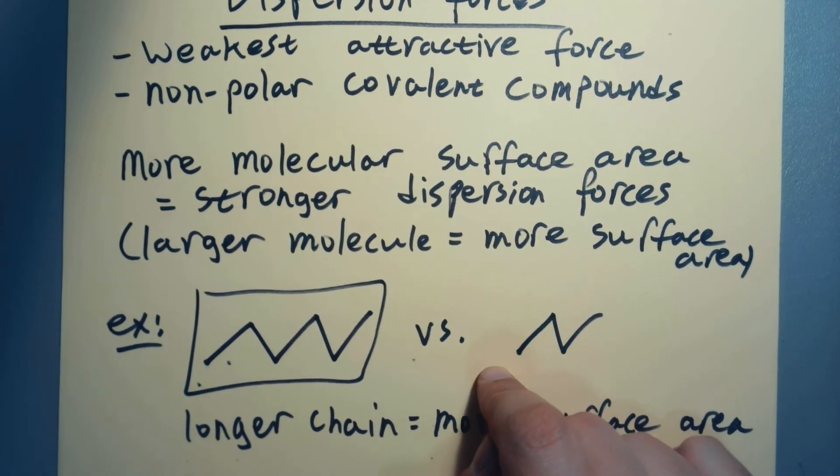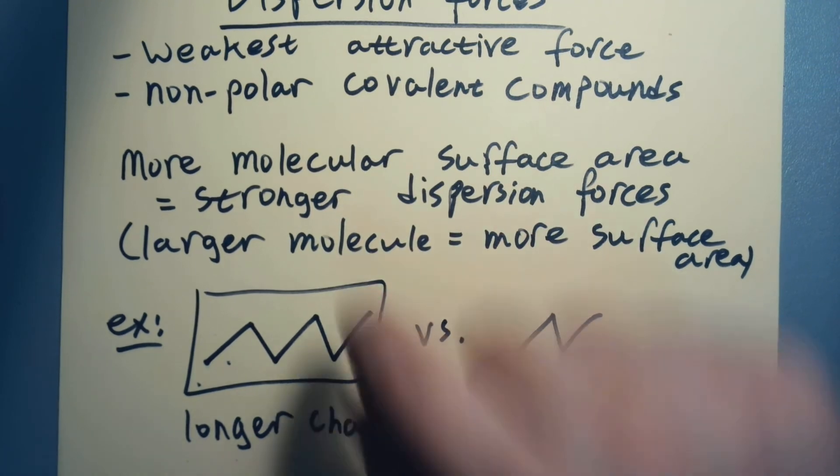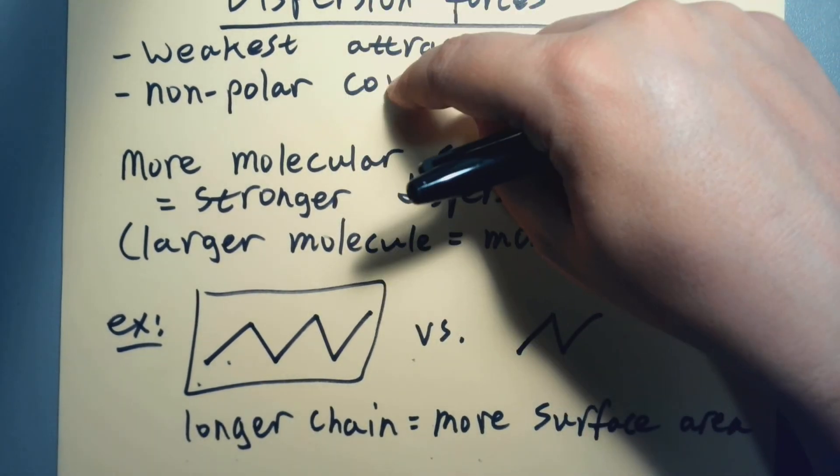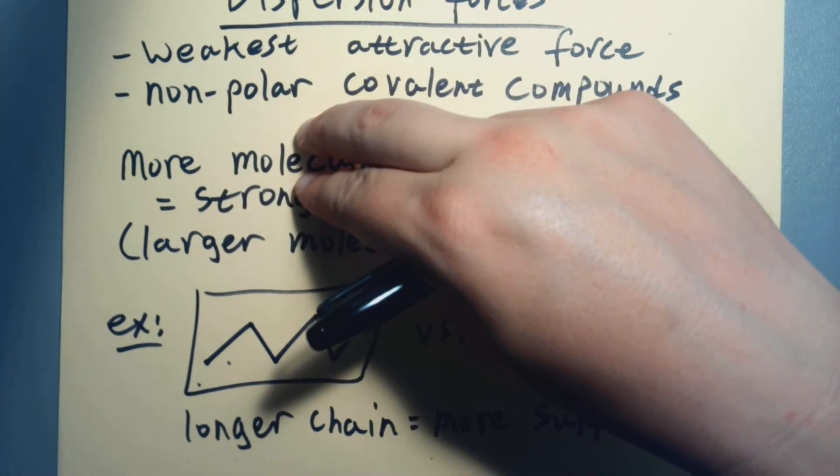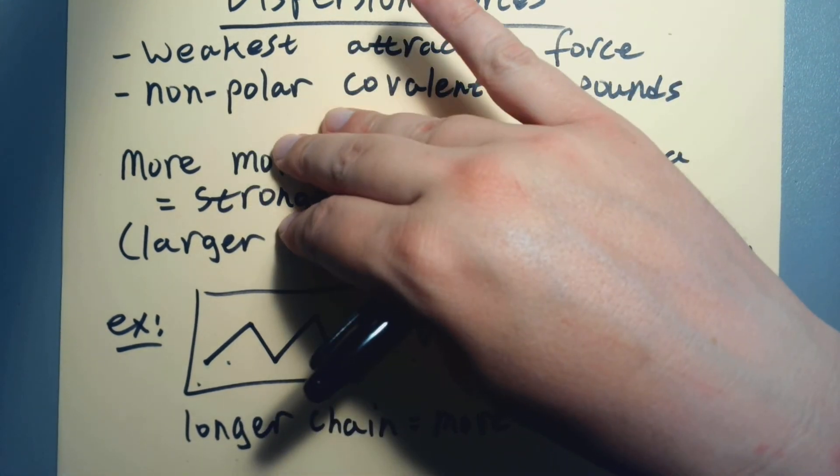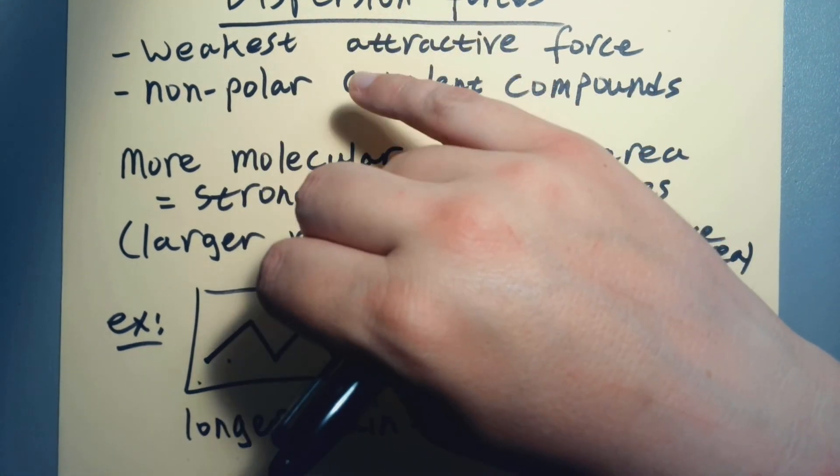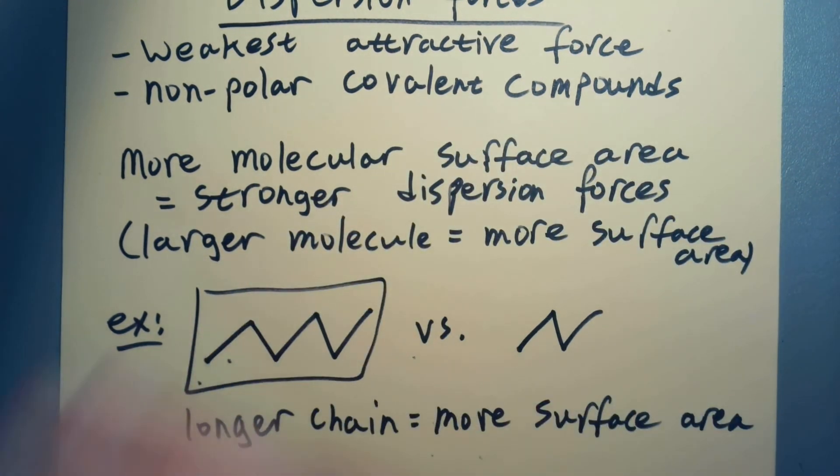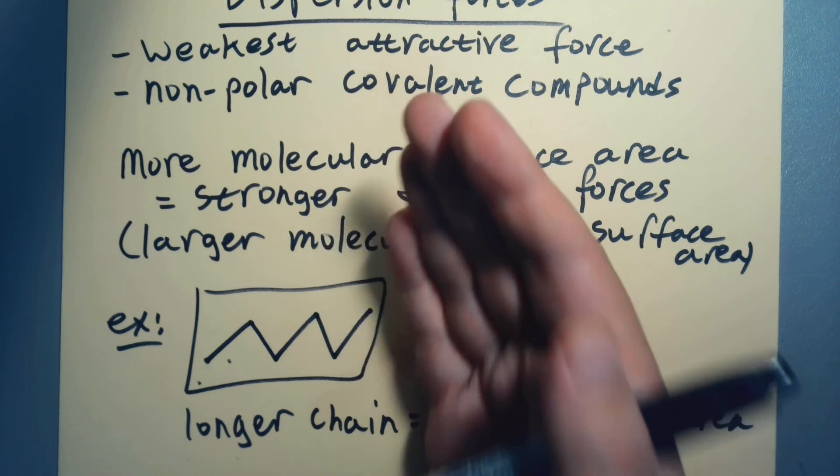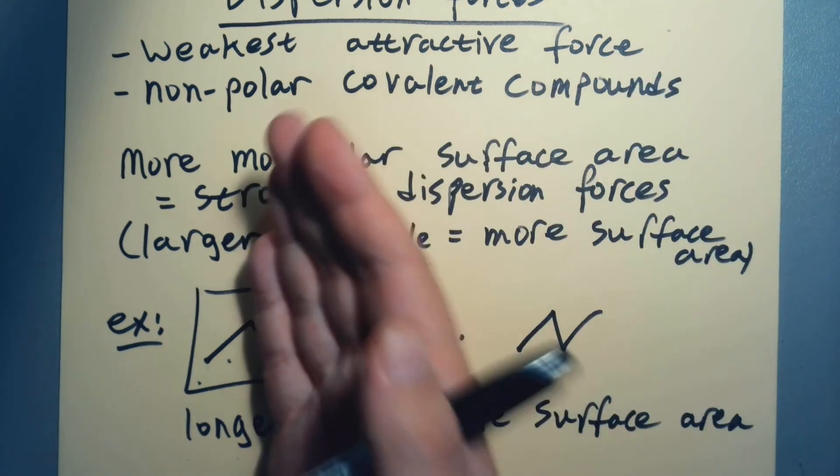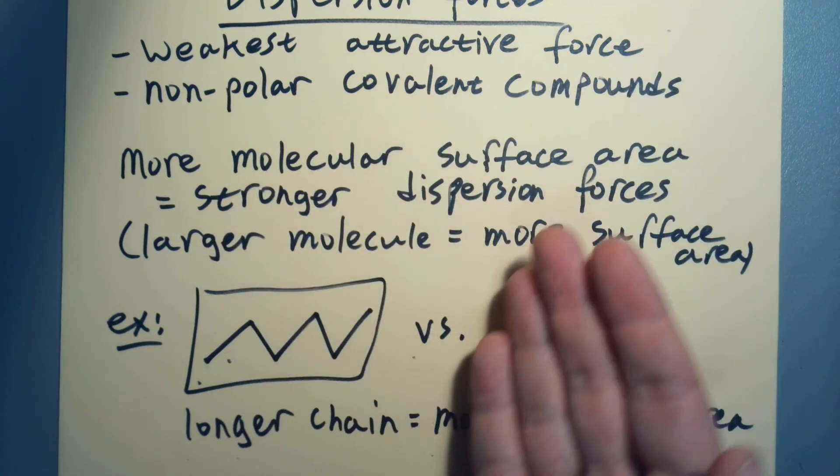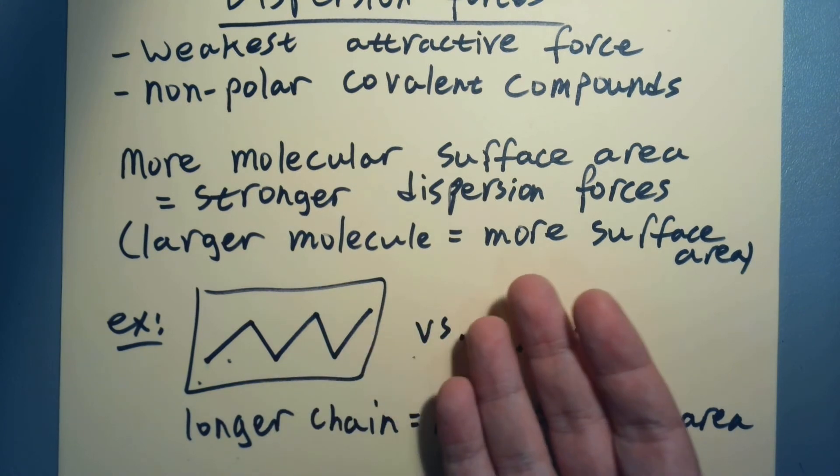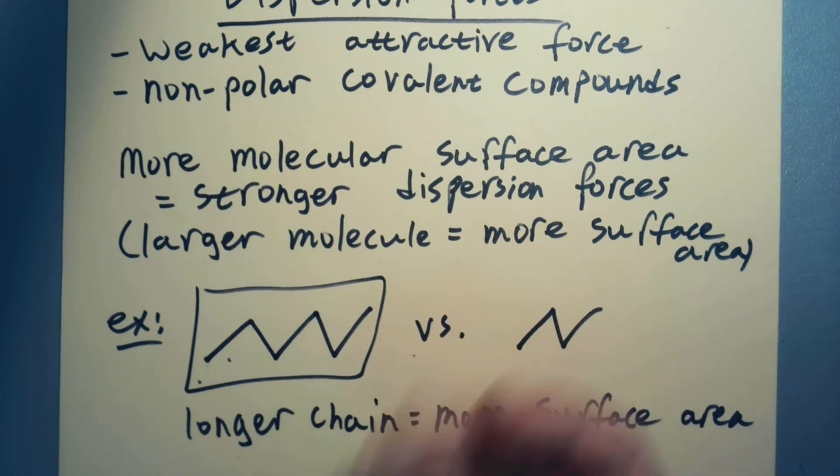So essentially you're just looking for a non-polar molecule that's bigger than the other one. Now if you see anything else and I'm like, 'oh, which of these has the strongest attractive force,' you want to look for ions first, you want to look for hydrogen bonding second, you want to look for a polar molecule third. And in the absence of all that you go, 'okay, well then dispersion forces are all that's left.' There's always dispersion forces, and there's just nothing else that's more important on that molecule. So I have to compare and figure out which one has more of it.